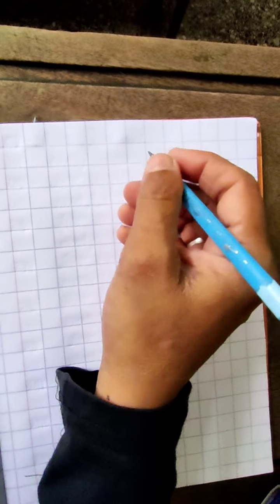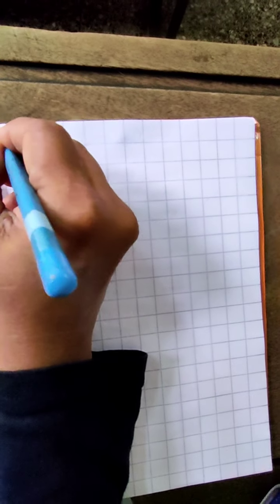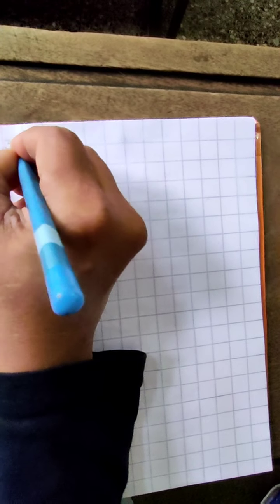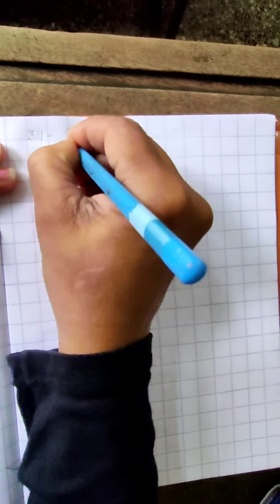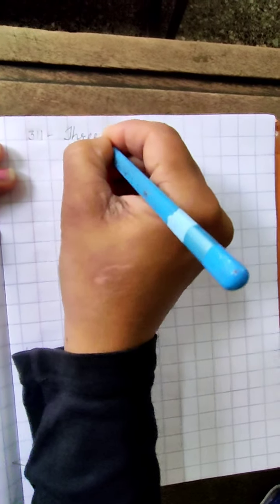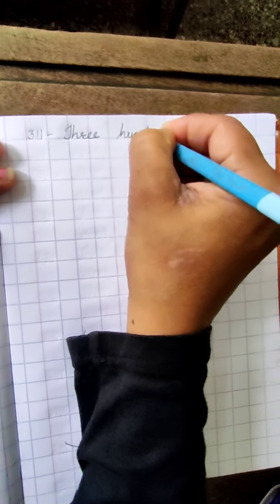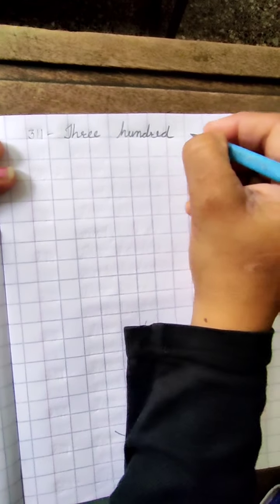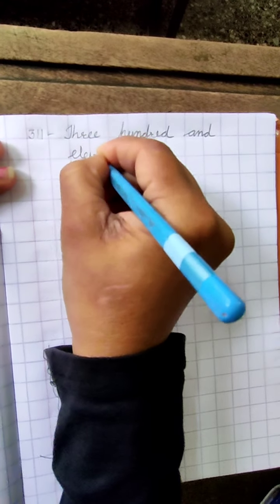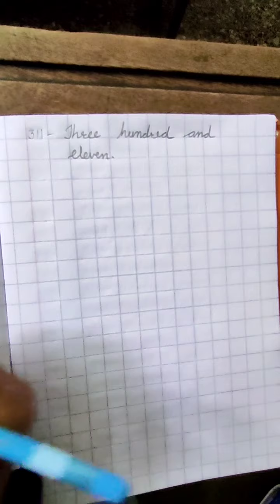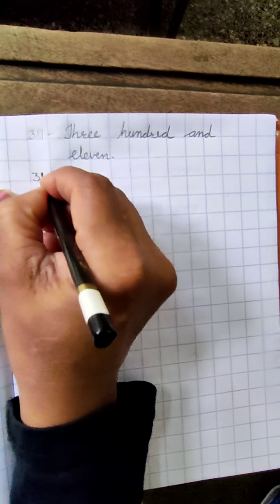Now students, we are going to write 311 in words. THREE HUNDRED — T-H-R-E-E, H-U-N-D-R-E-D, 100 — AND E-L-E-V-E-N, 11. Three hundred and eleven, 311. Then after, 312.